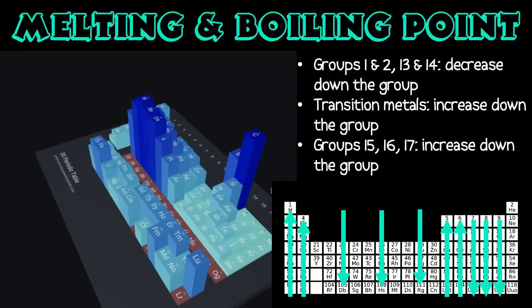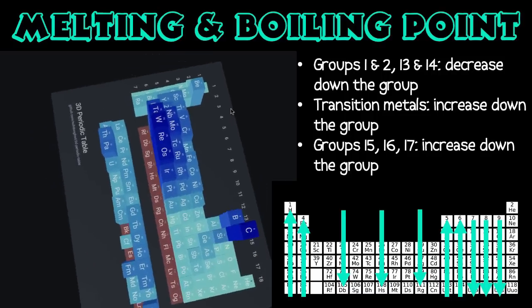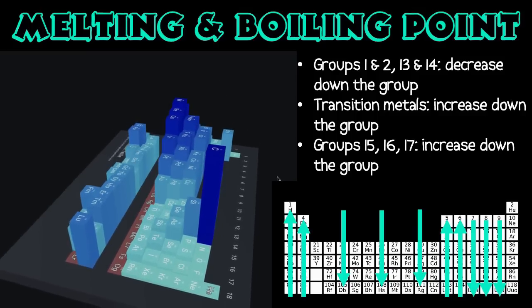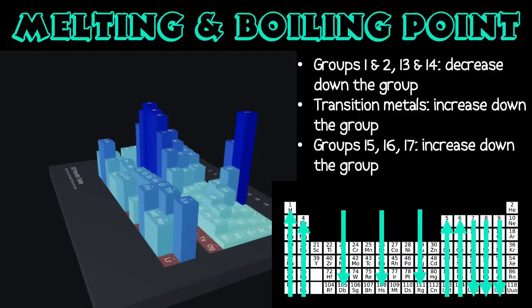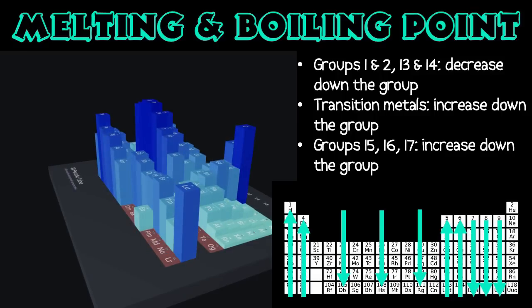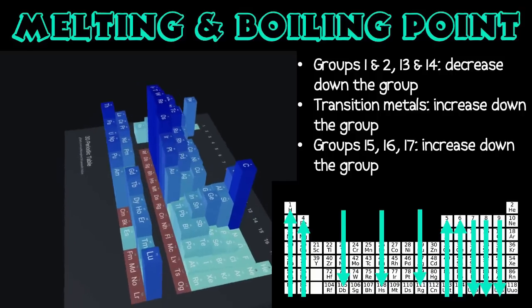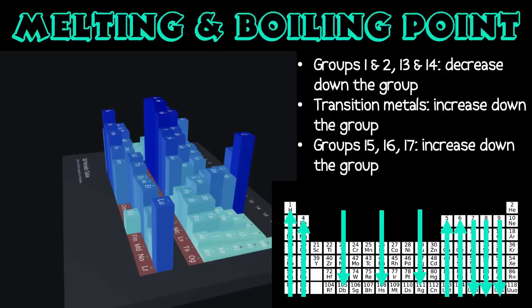For the transition metals, melting and boiling points generally increase as you move down the group. This is because the number of unpaired electrons increases, making more metallic bonds available. The more metallic bonds there are, the harder it is to break them to melt or boil the substance, so more energy is required. For groups fifteen, sixteen, and seventeen, melting and boiling points also tend to increase down the group because as these non-metal atoms increase in size, the strength of the intermolecular bonds or van der Waals forces increases, requiring more energy to break them.